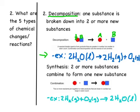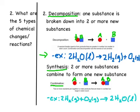The second type is actually the opposite of decomposition — it's called synthesis, or combination reaction, where two or more smaller substances combine to form one new larger substance. So we take A plus B and make compound AB. The example is the opposite of decomposition: hydrogen gas combines with oxygen gas to form water. Decomposition and synthesis are opposites.